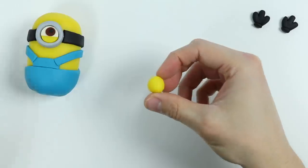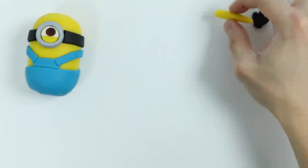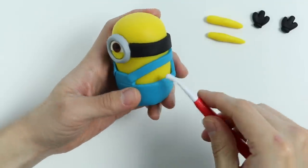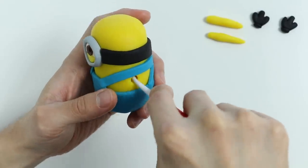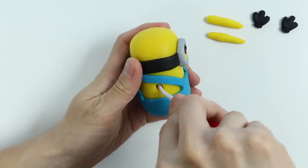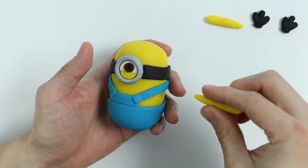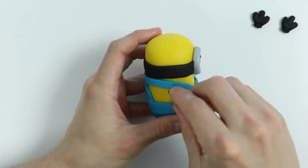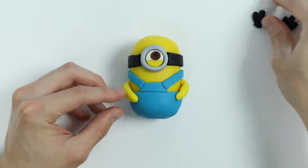Now let's make his arms. Just roll it out like this. Make one more. Now let's poke a hole on each side. Let's start by inserting the arms. Awesome! Now let's attach the hands.